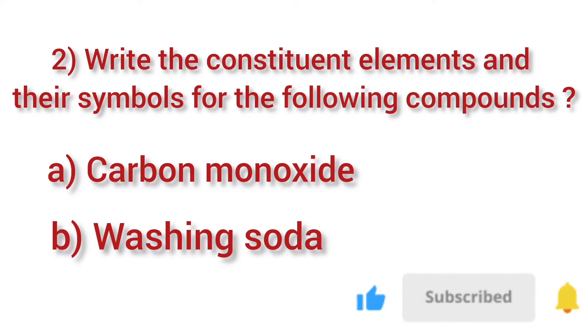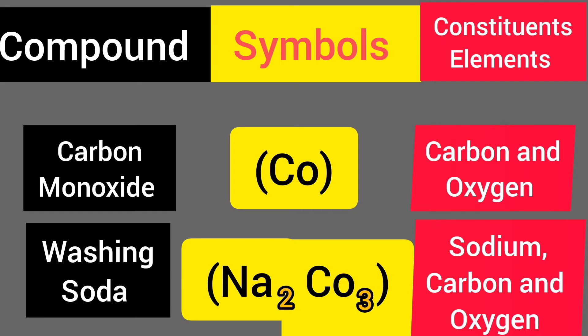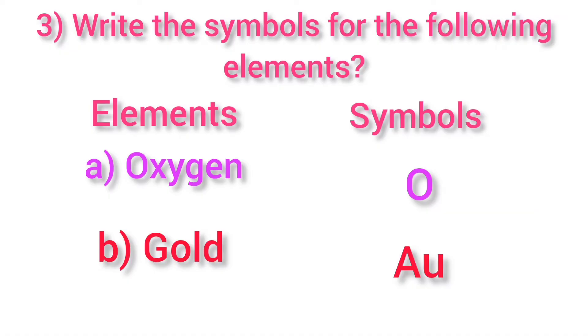Compound A - carbon monoxide: symbol CO, constituent elements are carbon and oxygen. Compound B - washing soda: symbol Na₂CO₃, constituent elements are sodium, carbon, and oxygen.